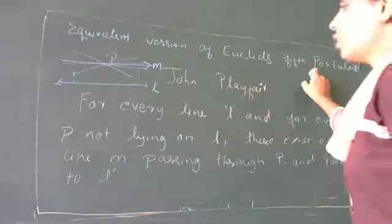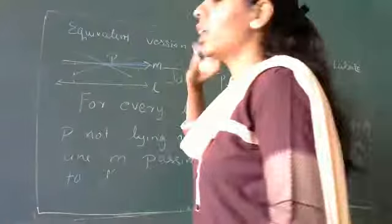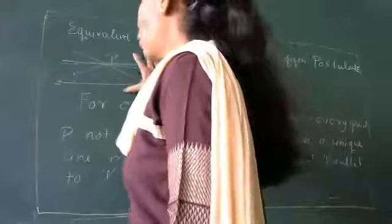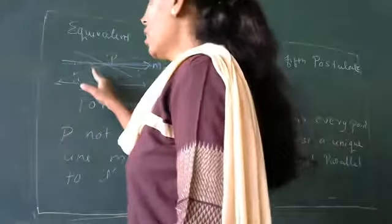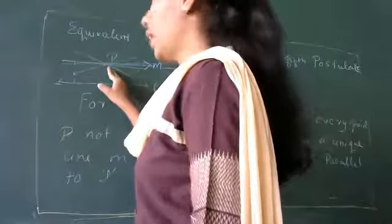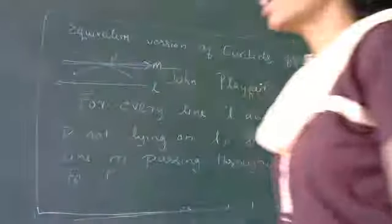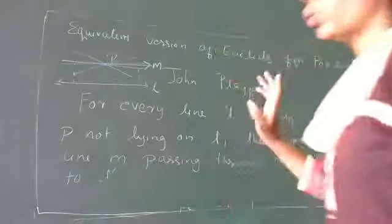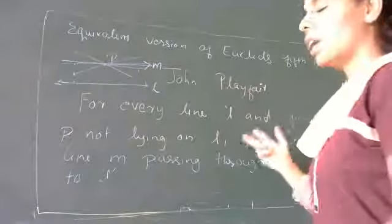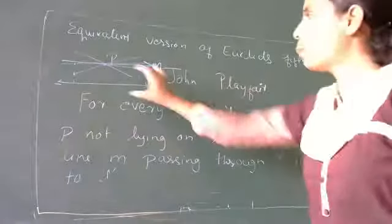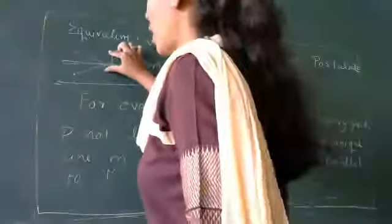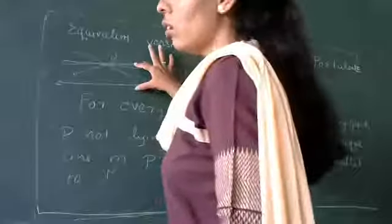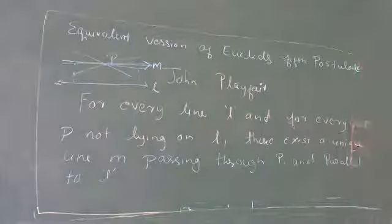Euclid's fifth postulate is also about two lines, but it does not mention those lines being parallel. It identifies that when a third line falls on two lines and the interior angles on one side are less than two right angles, those lines intersect at one point. Playfair's postulate, on the other hand, talks about a unique line through an external point that is parallel to a given line.